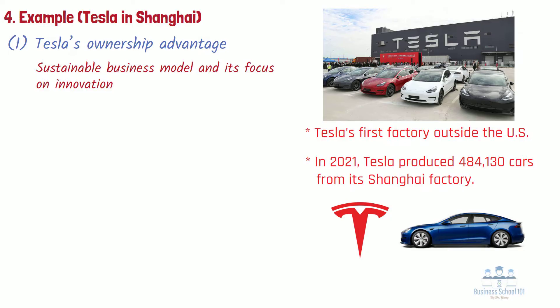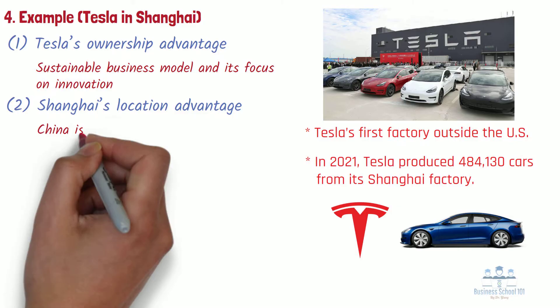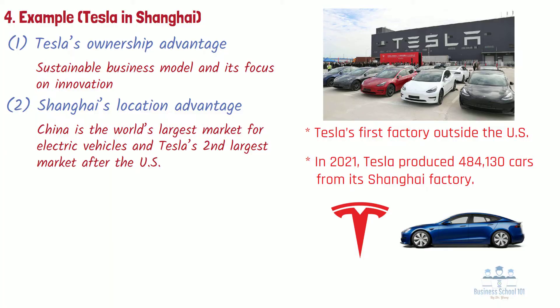Second, Shanghai's location advantage. China is the world's largest market for electric vehicles and Tesla's second largest market after the US. Having a plant in China can help Tesla lower shipping costs and make sourcing components more cost-effective, while allowing Tesla to avoid China's import duties on US-made cars amidst mounting trade tensions between the two countries.